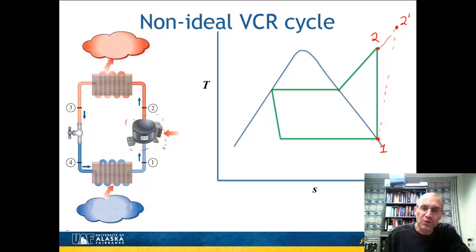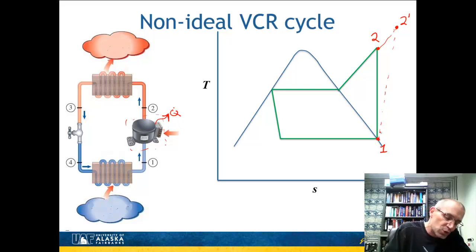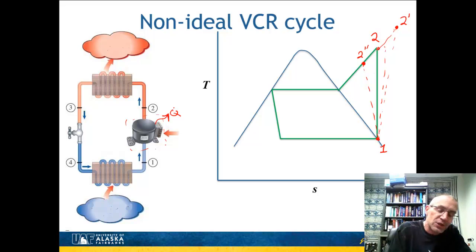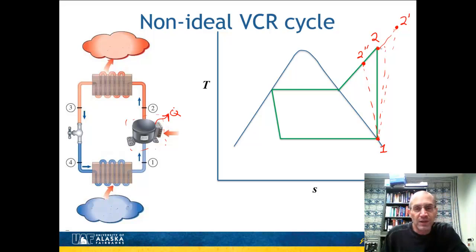There are a couple of things to recognize about refrigerator compressors. There may be some cooling occurring. If the compressor is not adiabatic and loses some heat, that would actually reduce the work requirement and move the exit state closer to point 2. In fact, if there is enough cooling — even with an inefficient compressor — you could achieve a state called 2 double prime, which actually results in lower work than the ideal isentropic case. So an inefficient but cooled compressor can outperform an adiabatic isentropic one.